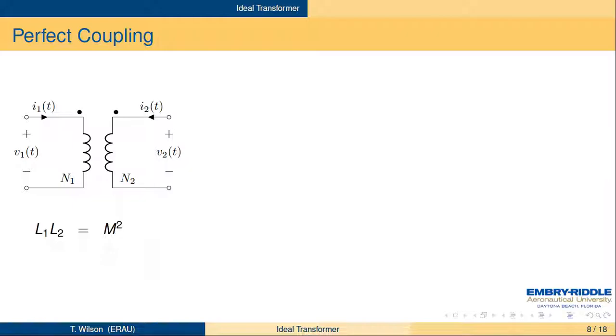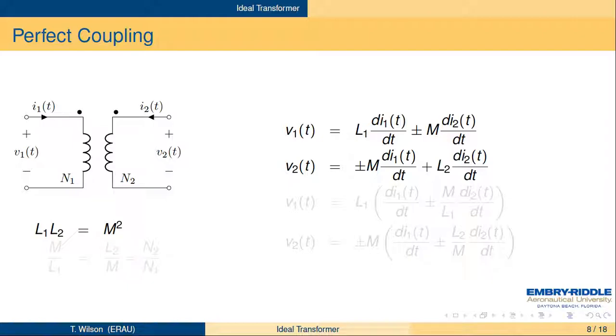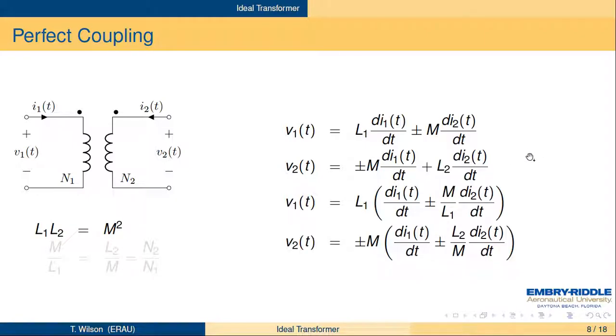So the ideal transformer. In the ideal transformer, we're going to take advantage of this coupling issue and use perfect coupling. In perfect coupling, the product of L1 and L2 is M squared. Here are our device characteristics for the mutual inductance coupled coils. We're going to factor L1 out of the V1 equation and factor plus or minus M out of the V2 equation. When we do that, we notice that because of this relationship in perfect coupling between M over L1 and L2 over M, those have to be the same thing for L1 L2 to equal M squared. It also turns out that that ratio is the same thing as N2, the number of windings in the secondary coil, over N1, the number of windings in the primary coil.